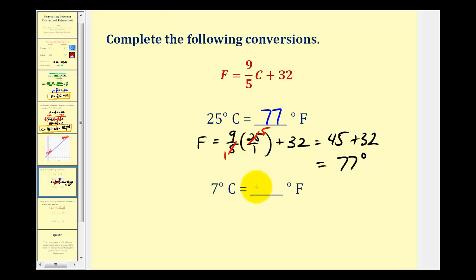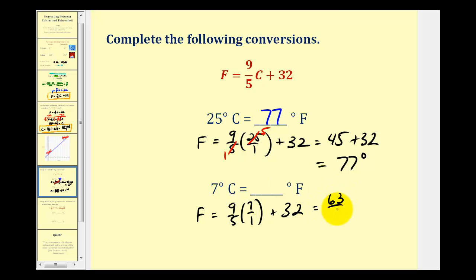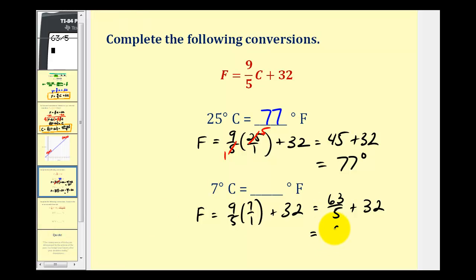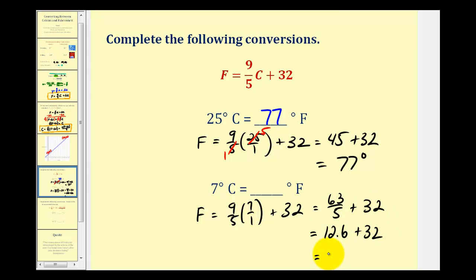Let's convert 7 degrees Celsius to Fahrenheit. We have (9/5) times 7, plus 32. This doesn't simplify as cleanly, so we get 63/5 plus 32. Converting 63/5 to a decimal gives us 12.6, and 12.6 plus 32 equals 44.6 degrees Fahrenheit.